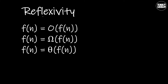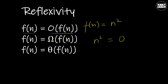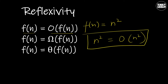Our first property is reflexivity. If we have a function f(n), then f(n) is the Big O of f(n). For example, if we have a function f(n) given by n squared, then n squared will be the Big O of n squared. This property is applicable for Big O, Big Omega, and Theta notations.